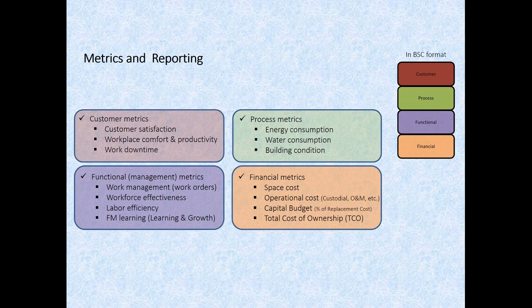Here's a slightly different view, still the balanced scorecard approach, but with more detail on what we might measure. Under the customer metrics: satisfaction, workplace comfort and productivity, and work downtime. That third one — work downtime — may be one of the key performance indicators we have, because if we can't provide heat, light, comfort, and connectivity to technology, we may not be able to perform our function. We also have process metrics — energy, water, building condition — functional metrics covering how we manage work, and learning and growth. That's putting a little more detail around the balanced scorecard concept.